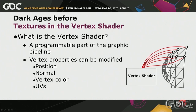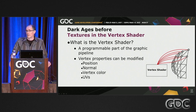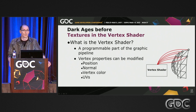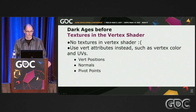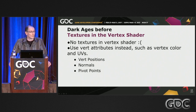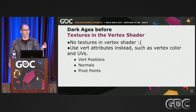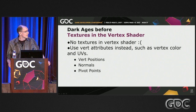So what is the Vertex Shader? The Vertex Shader is a programmable part of the graphic pipeline where vertices are modified — we can modify position, normal, vertex color, and UV mapping. Before having textures in the Vertex Shader, we had to use mesh attributes to fit information into the Vertex Shader to modify vertex position, normals, or create pivot points. Pivot points are transformation points we can use to transform position or rotation on several vertices at the same time on a mesh.